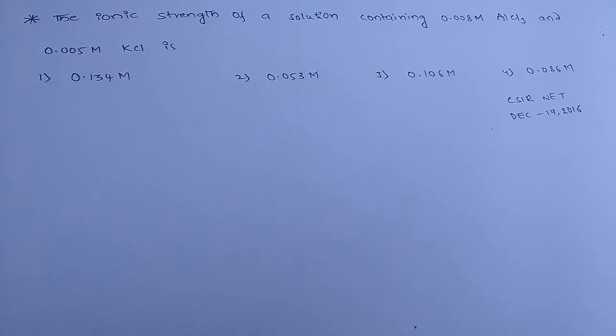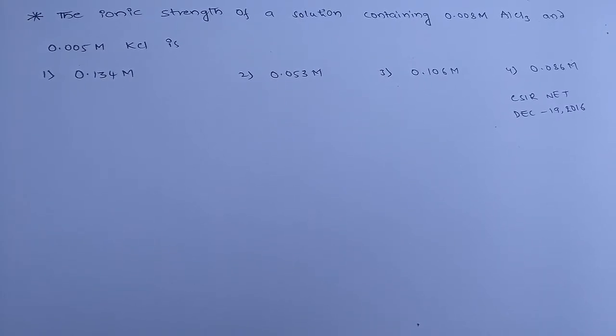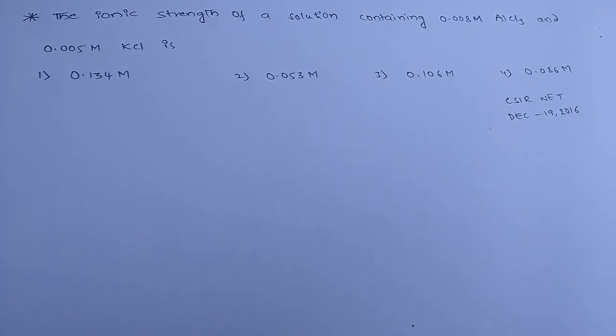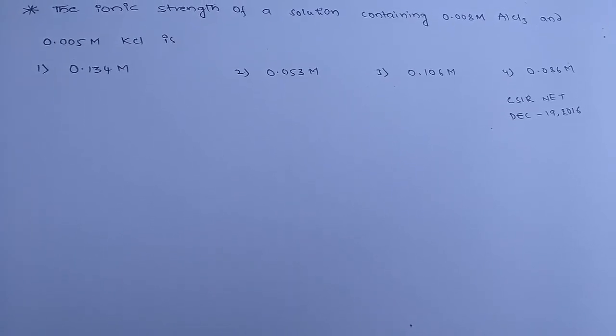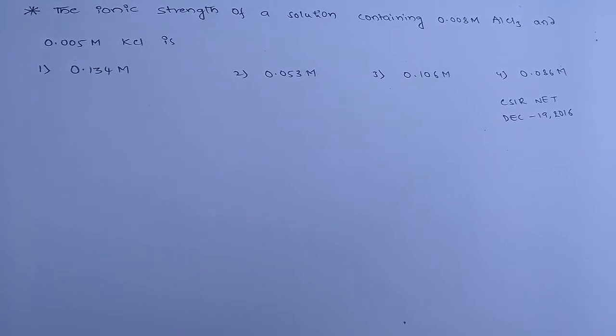The question is: the ionic strength of a solution containing 0.008 M AlCl3 and 0.005 M KCl is? We have four options. First one is 0.134 M, second one 0.053 M, third one 0.106 M, and fourth one is 0.086 M.